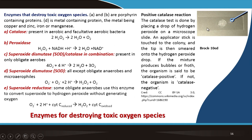Here is an example of a positive catalase reaction. To test whether an organism has catalase enzyme, a drop of hydrogen peroxide is placed on a microscopic slide. An applicator stick is touched to the colony of the microorganism being tested, and the tip is smeared into the hydrogen peroxide drop. If there are bubbles or froth, the organism is catalase positive. If there are no bubbles, the organism is catalase negative.